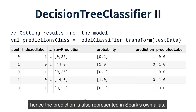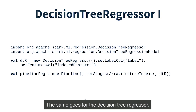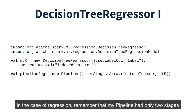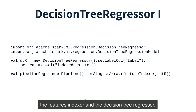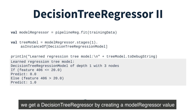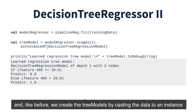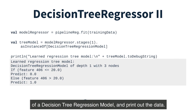Hence, the prediction is also represented in Spark's own alias. The predicted label, however, returns a string value that represents the original names of the labels in the dataset. The same goes for the decision tree regressor. In the case of regression, remember that the pipeline had only two stages: the features indexer and the decision tree regressor. Similarly to our decision tree classifier, we get a decision tree regressor by fitting our pipeline from the training data values, and we create the tree models by casting the data to an instance of a decision tree regression model and print out the data.